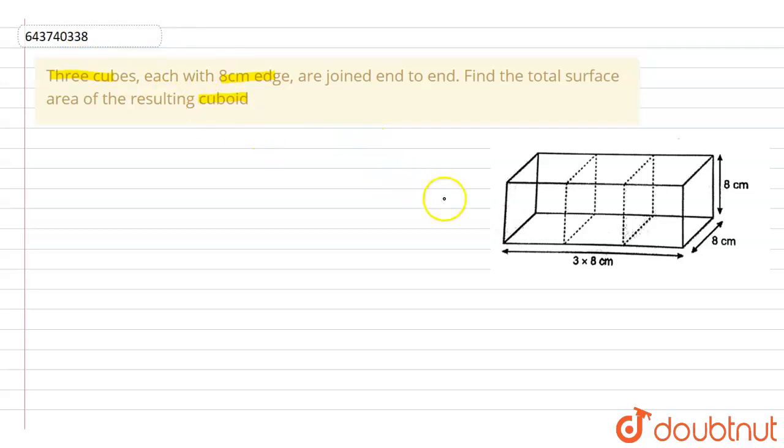So what we are given is we have three cubes. Let the three cubes be - this is the first cube, second cube and the third cube. Each cube has eight centimeter edge, that is its length is eight centimeter, its height is eight centimeter and its breadth is eight centimeter.